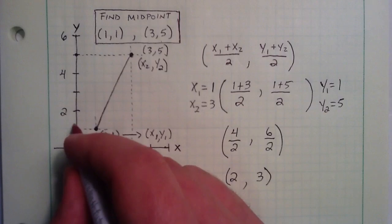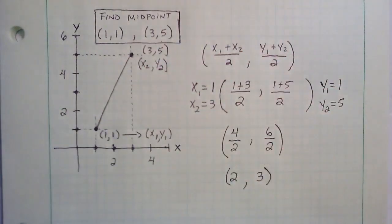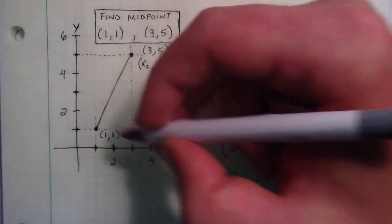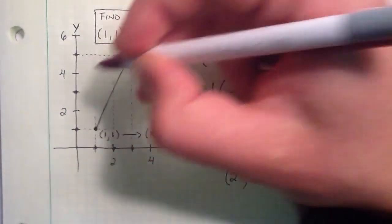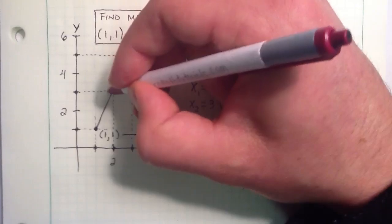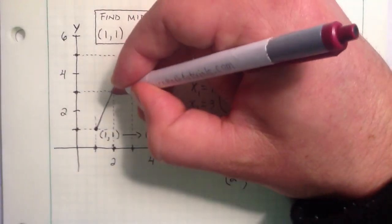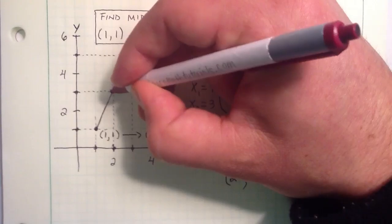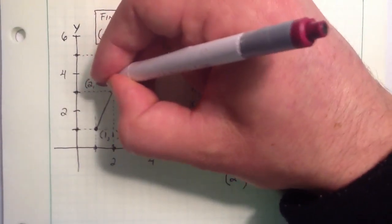And a y component of 3, starting at 0, going up 1, 2, 3 on the y-axis. And so, connecting these two projections right here should land us right in the center of this line segment. And it looks like it does. And so where these two projections cross, we put the point there, which represents our midpoint, (2,3).